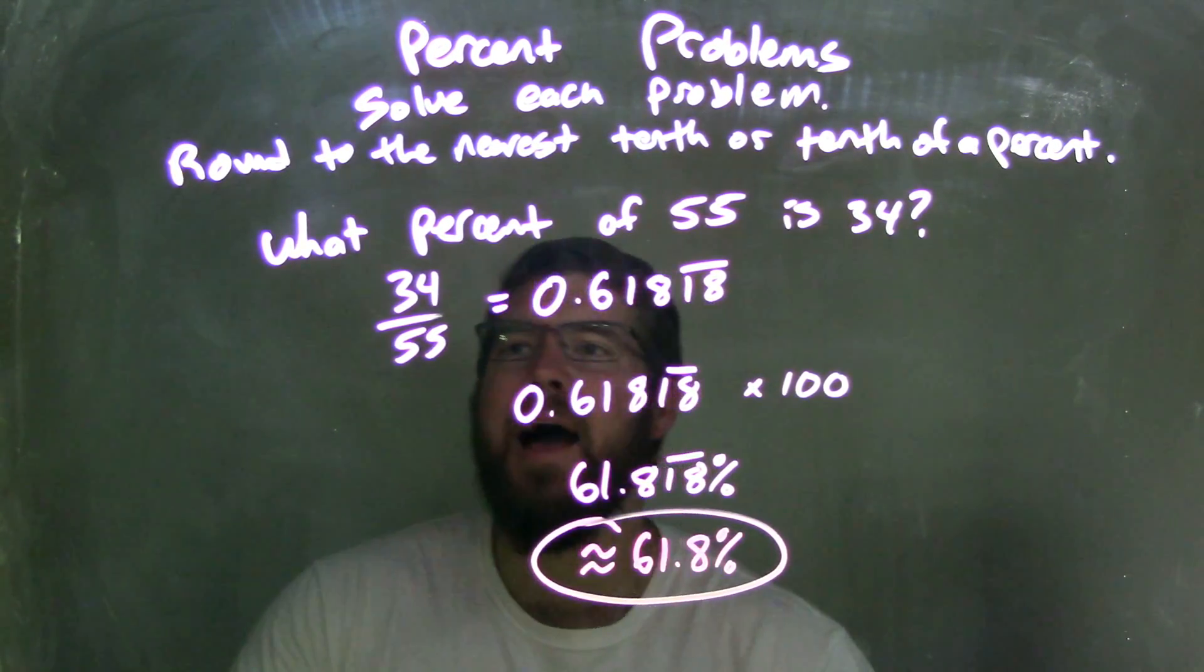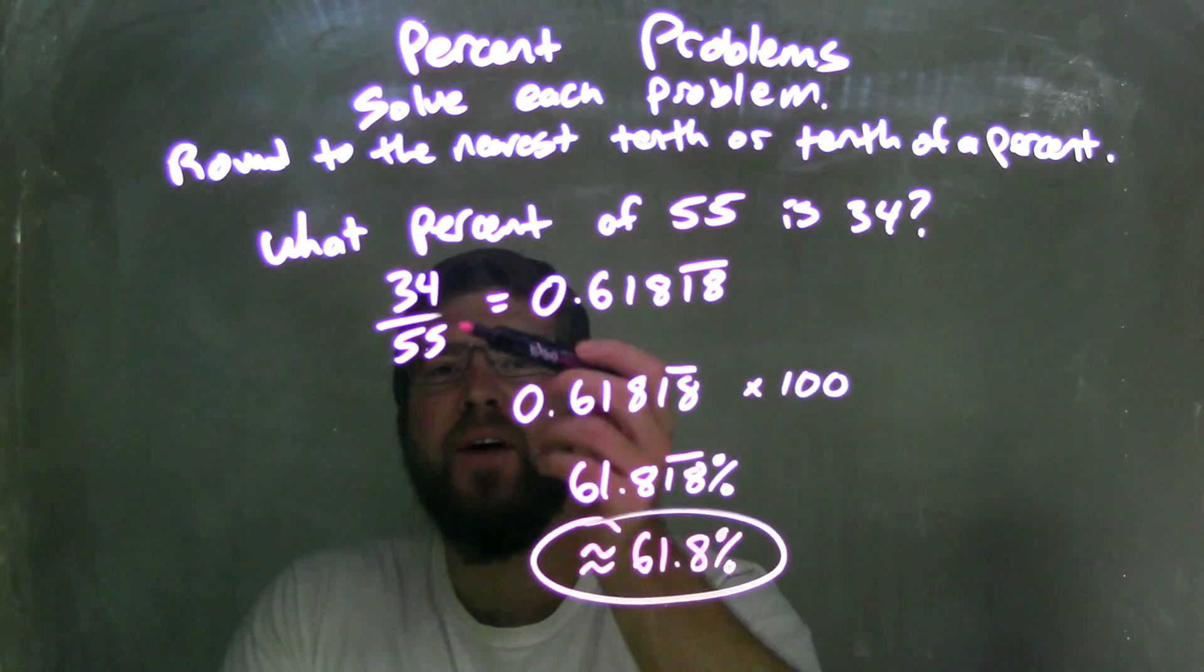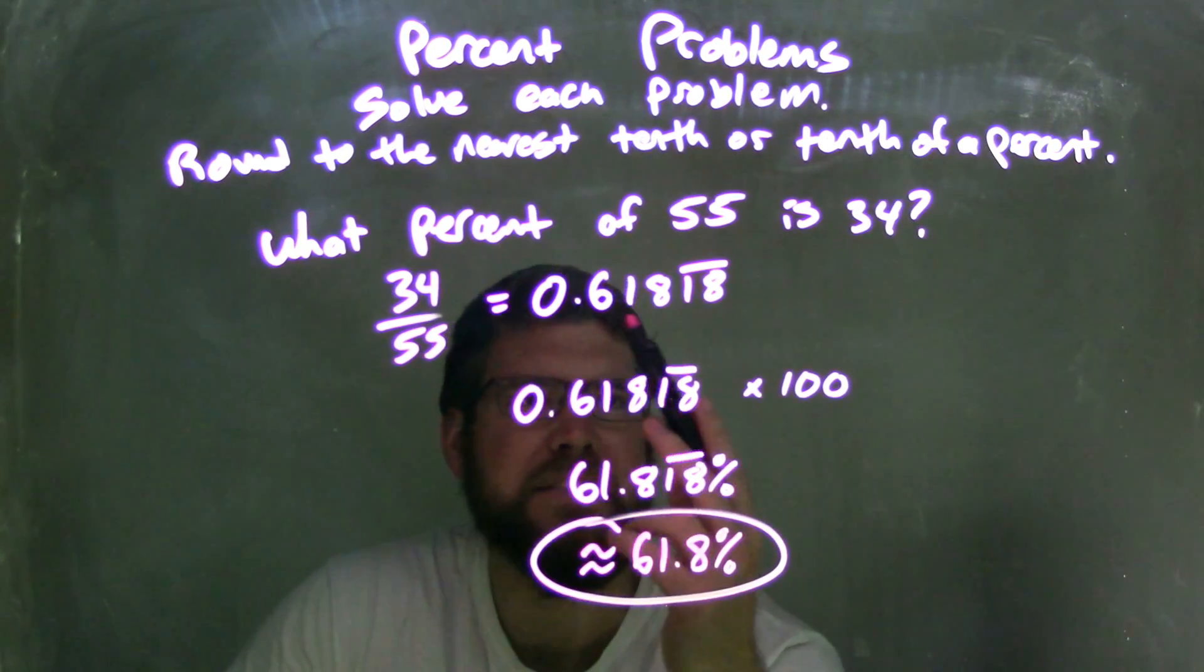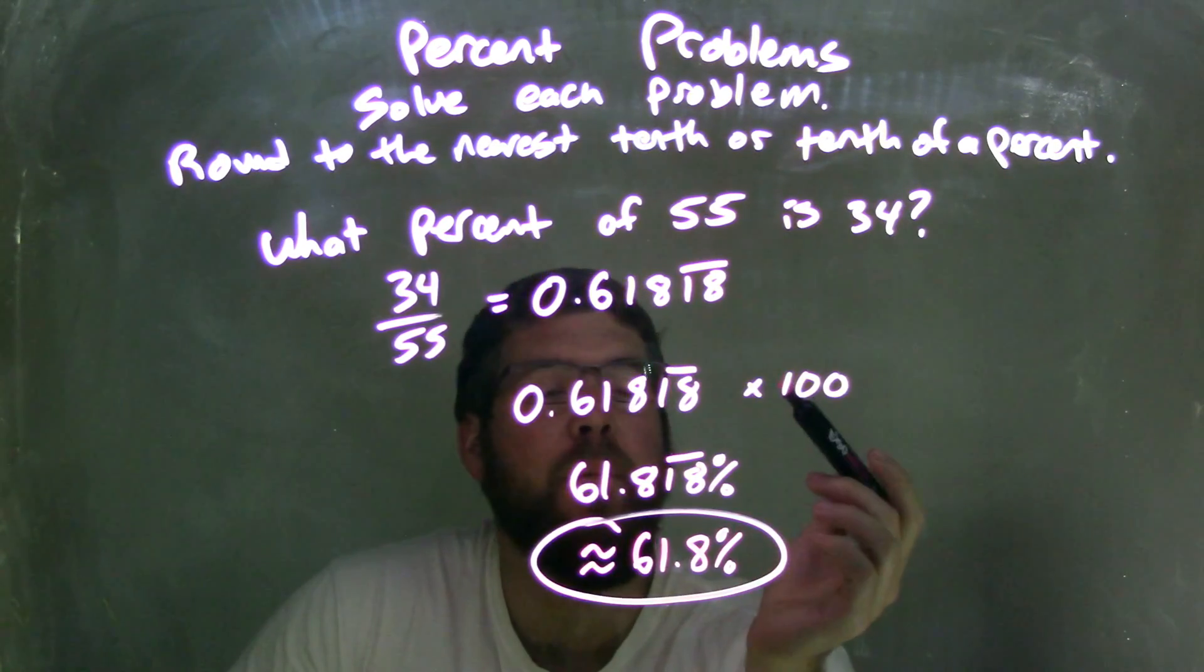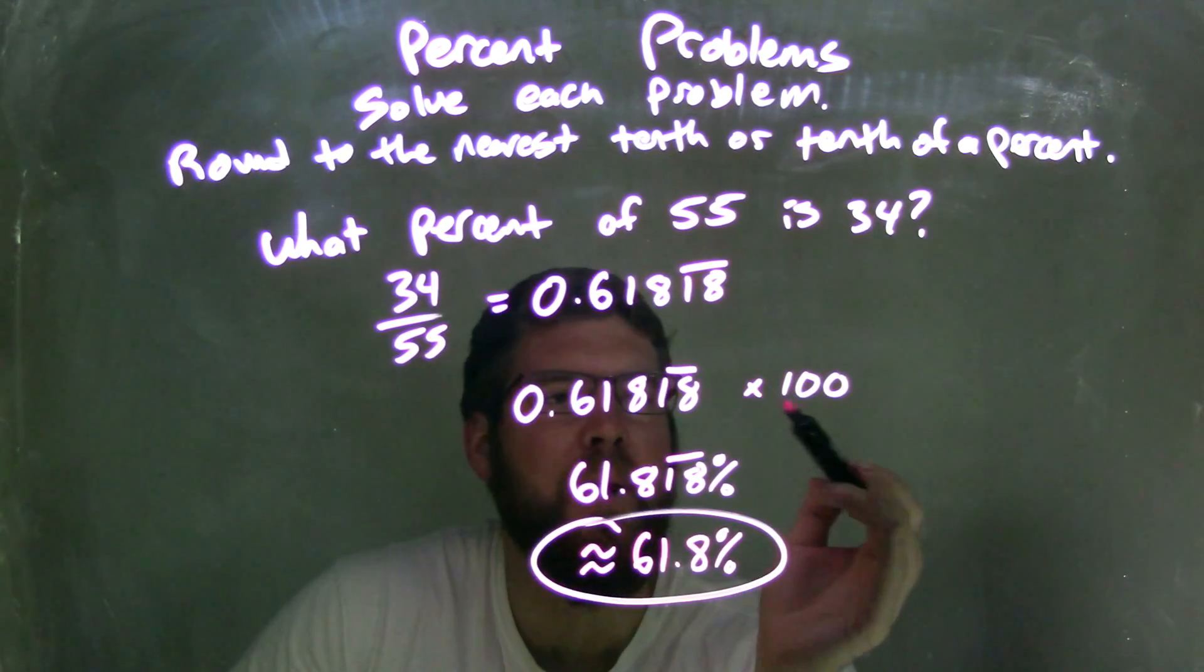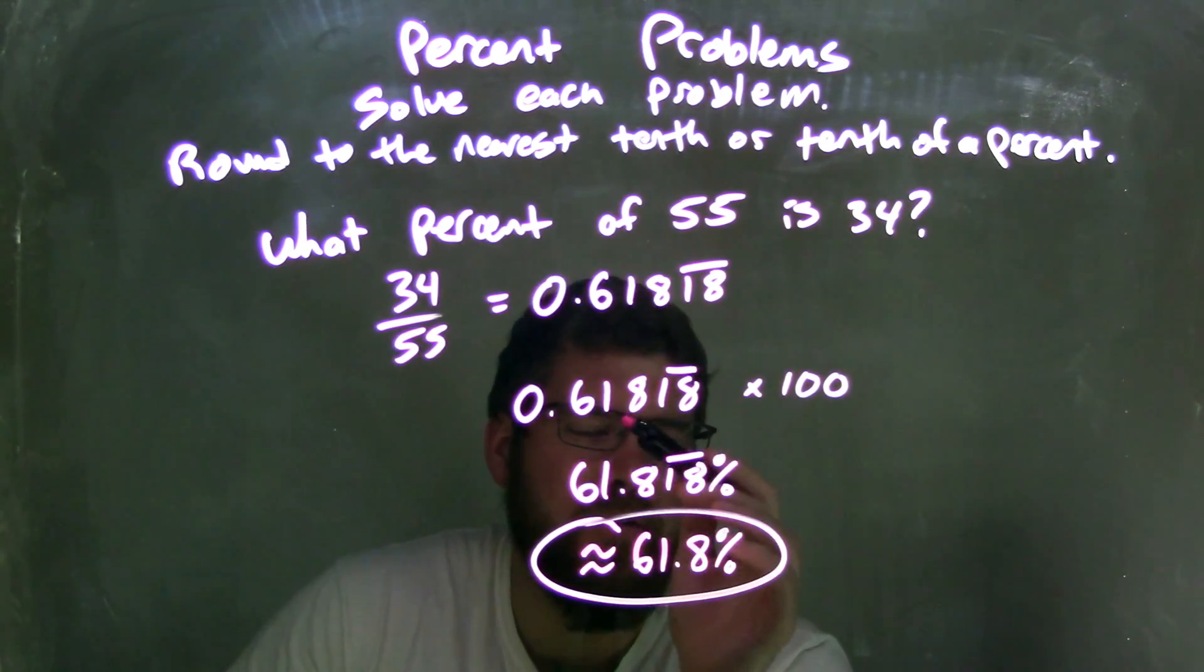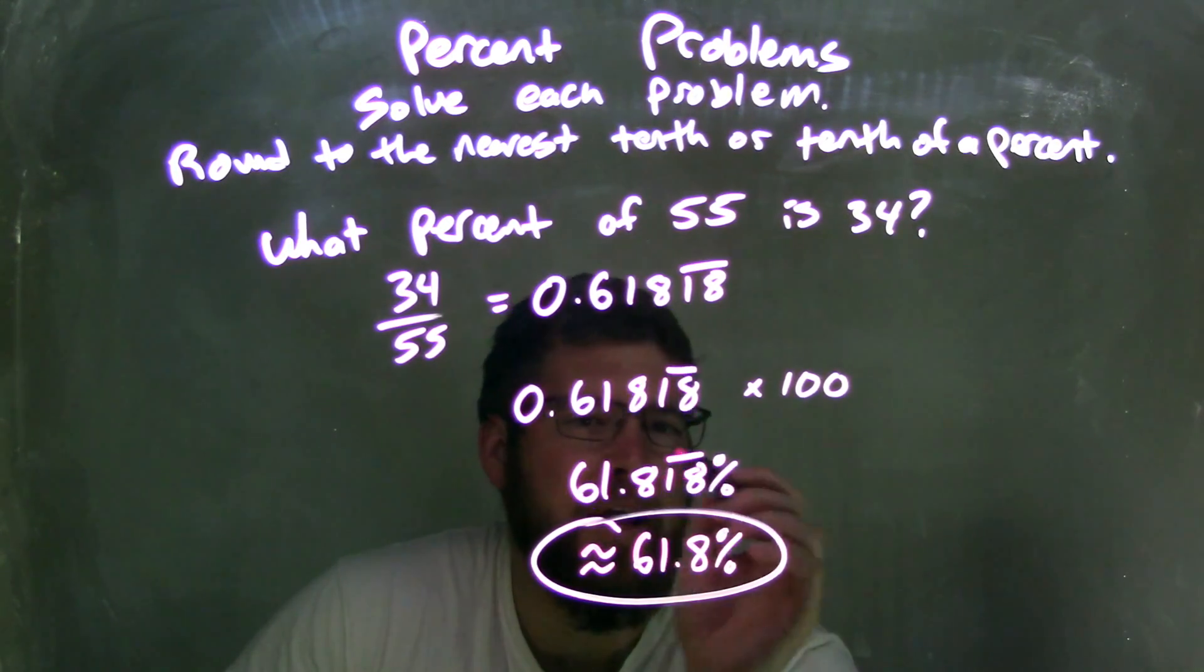So as a recap, we're going to ask the question, what percent of 55 is 34? I took the 34 and divided it by 55. That gave me this decimal with my calculator, 0.61818 repeating, and the 1, 8 repeats forever. I then had to convert that to a percent, so I multiplied that number by 100. So I moved the decimal point two points over to the right, giving it a 61.8, and then 1, 8 repeating forever.